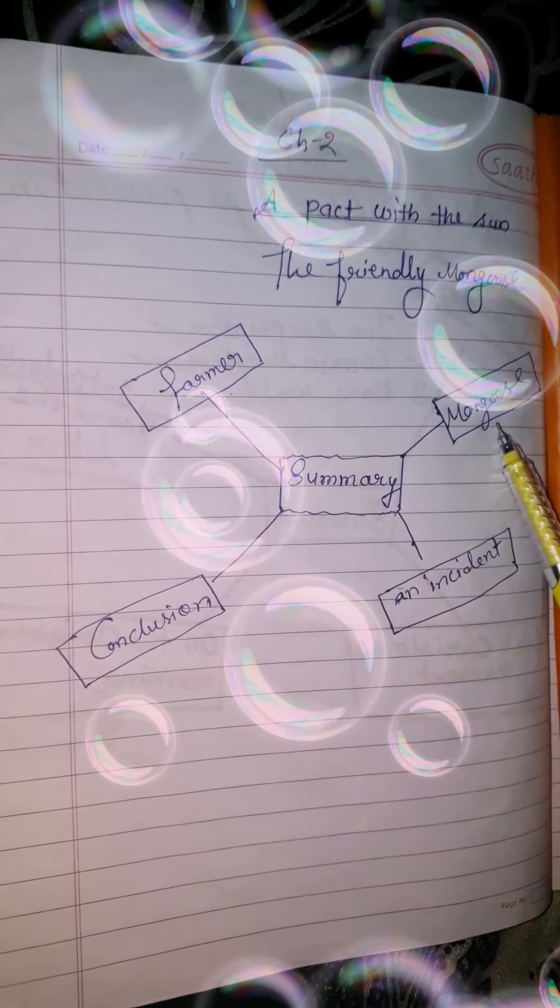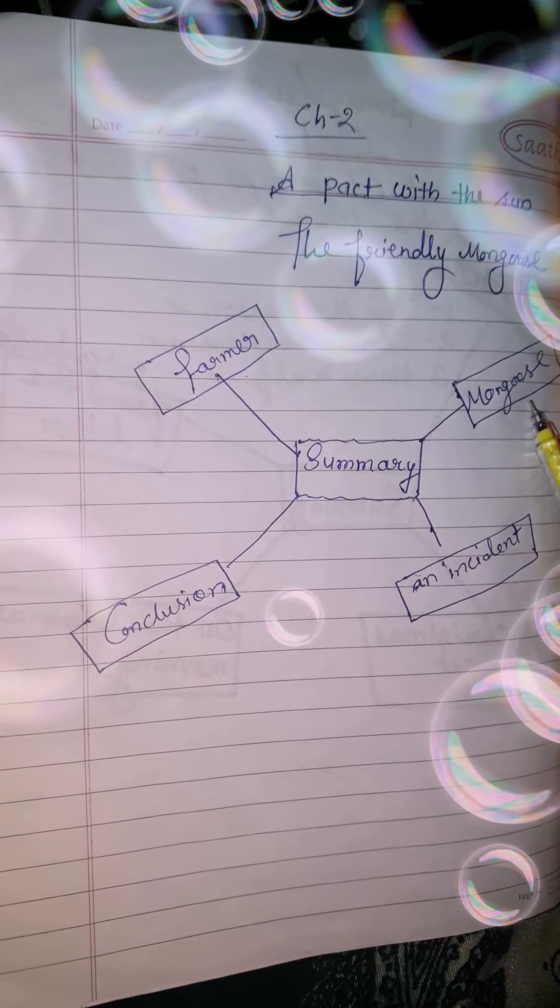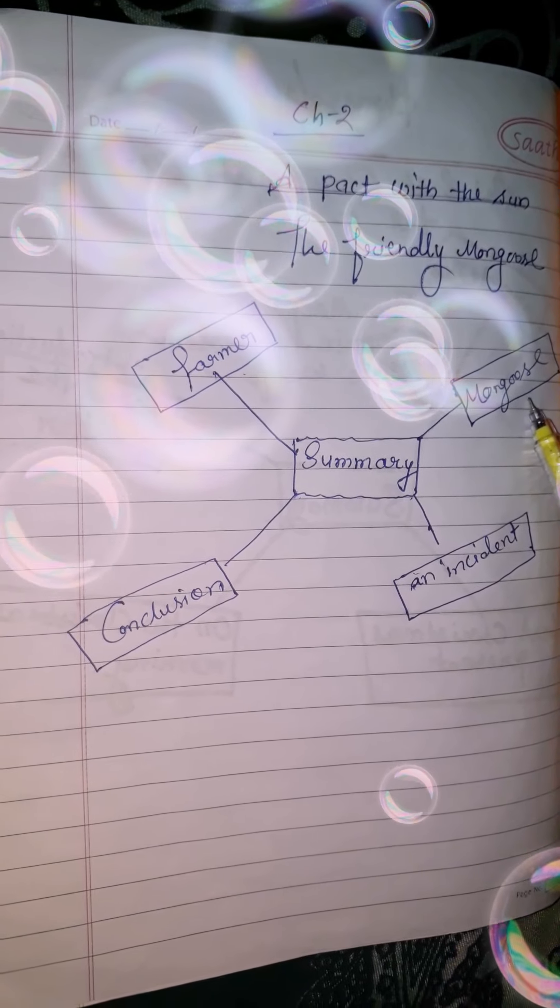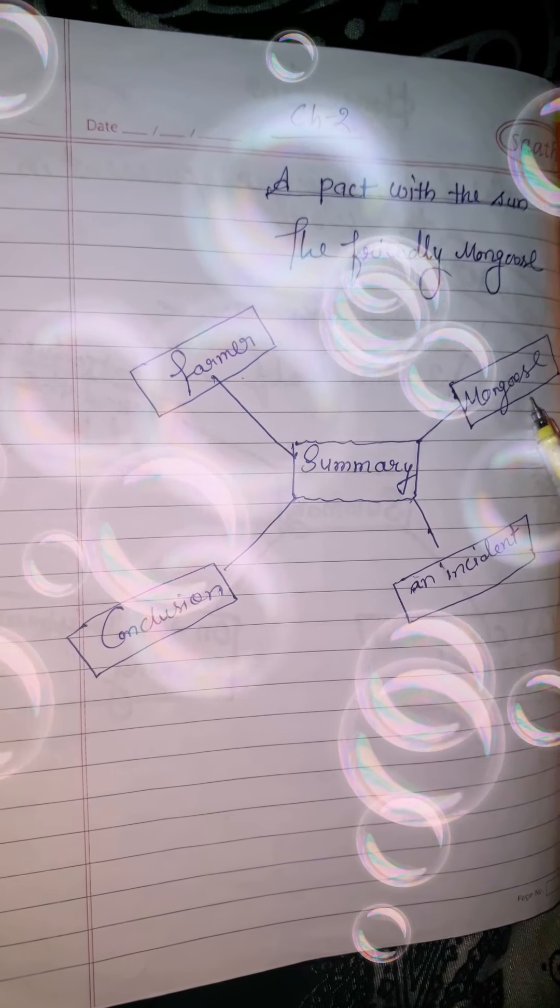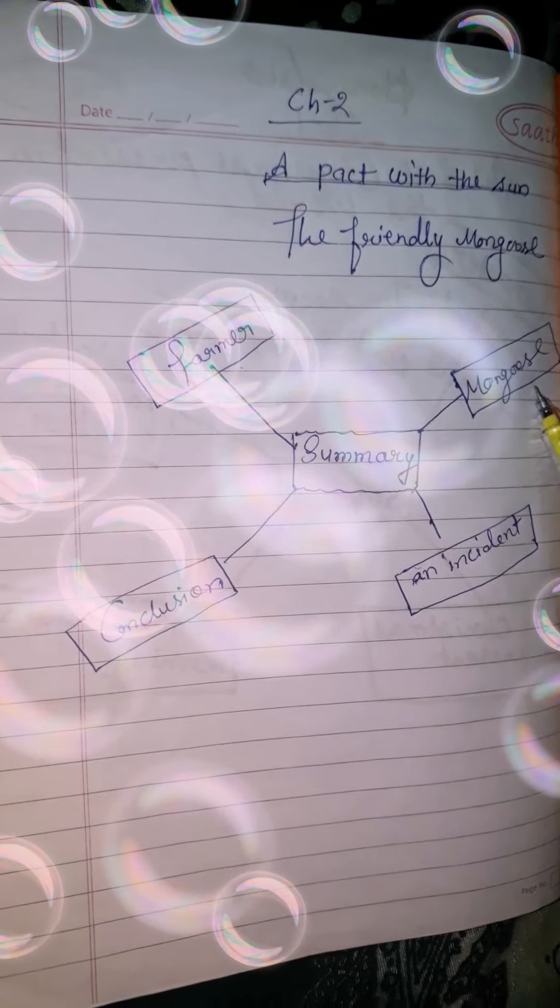Next point, Mongoose. The farmer brought a tiny mongoose who will soon grow up and becomes friend to his son. Both the baby and the mongoose grew. In five or six months, the mongoose had grown to its full size.